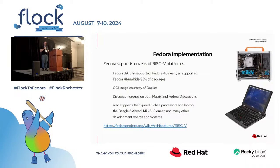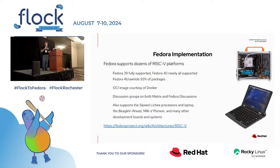Red Hat Research has a number of these machines that we're working on making publicly accessible through the Massachusetts Open Cloud. RISC-V International has given away a number of these as well. They are in the $5,000 to $6,000 range and they're available now — you can order them. There's a lot of hardware coming out.